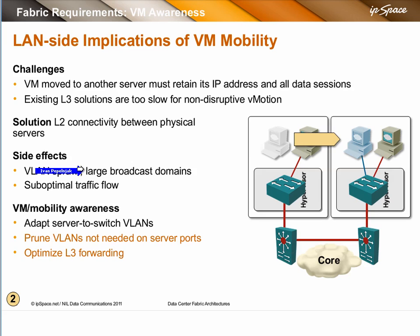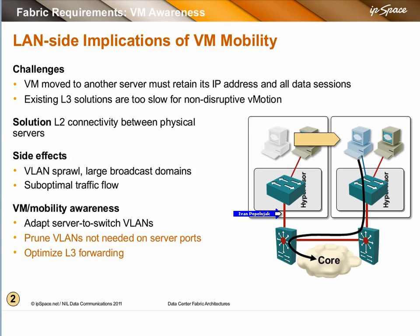Even though you moved the virtual machine, the layer 3 next hop is still the same, so the traffic will go suboptimally. That's why VM and mobility awareness is so important — because if nothing else, these switches can reduce the number of VLANs on the server trunks and configure them dynamically.